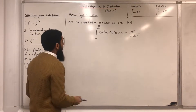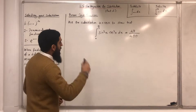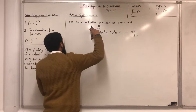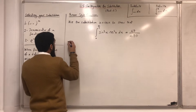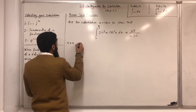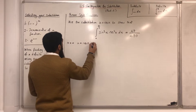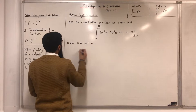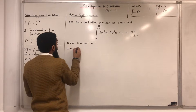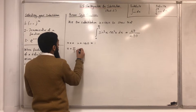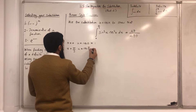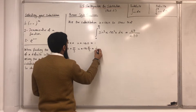Step number one: we need to change the limits. When x is equal to 0, u is equal to cos(0), which is 1. When x is equal to π/3, u is equal to cos(π/3), which is a half.